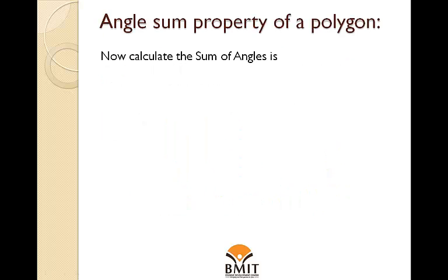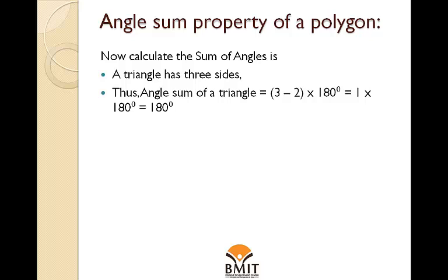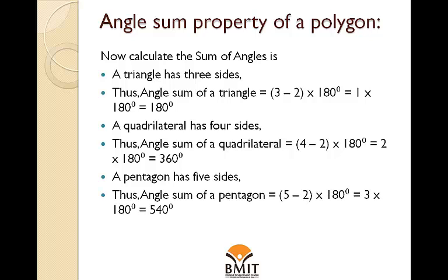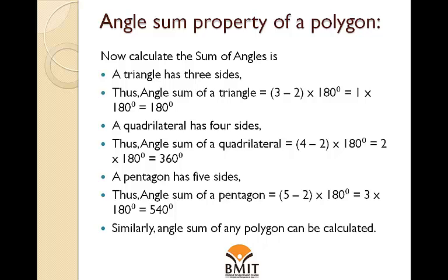Now calculate the sum of angles. A triangle has 3 sides; angle sum = (3 − 2) × 180 = 180 degrees. A quadrilateral has 4 sides; angle sum = (4 − 2) × 180 = 2 × 180 = 360 degrees. A pentagon has 5 sides; angle sum = (5 − 2) × 180 = 3 × 180 = 540 degrees. Similarly, the angle sum of any polygon can be calculated.